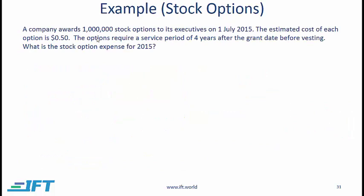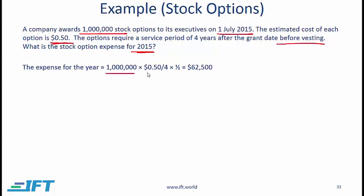Here is an example: a company awards 1 million stock options to its executives on 1st July 2015. The estimated cost of each option is 0.5. The options require a service period of 4 years after the grant date before vesting. What is the stock option expense for 2015? We have 1 million options times 0.5, giving a total fair value. We divide by 4 because the service period is 4 years, so every year the amount is 0.5 million divided by 4. Since these options are granted in the middle of 2015, we multiply by half. So the expense for 2015 is 62,500.